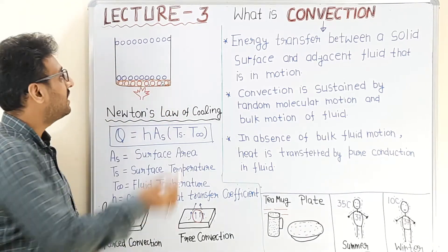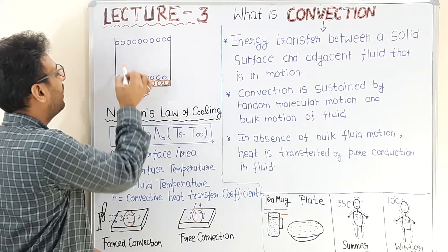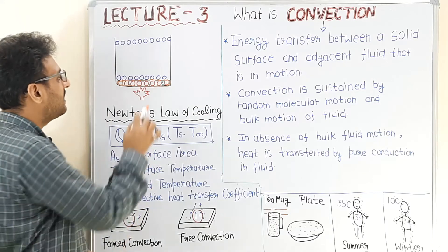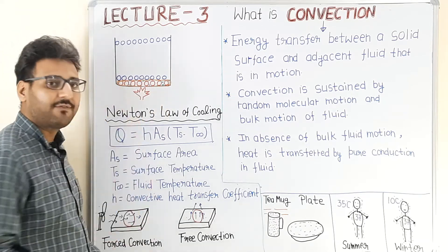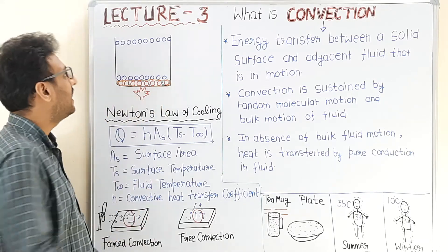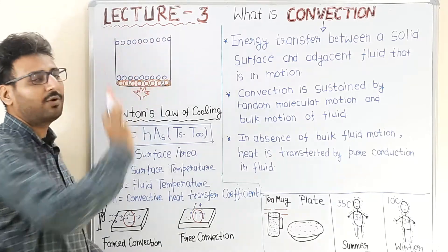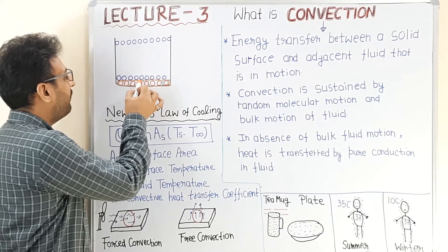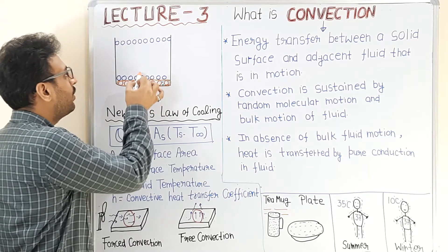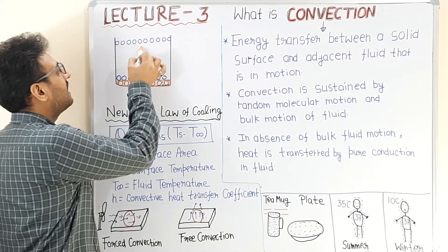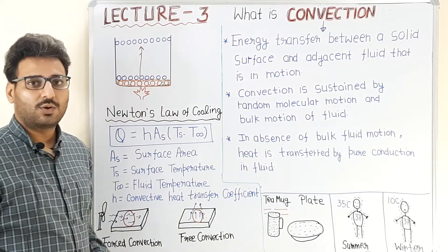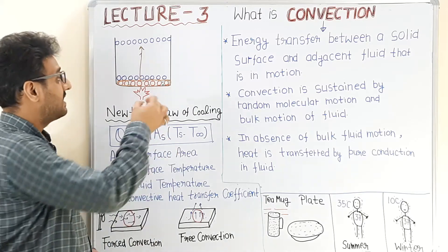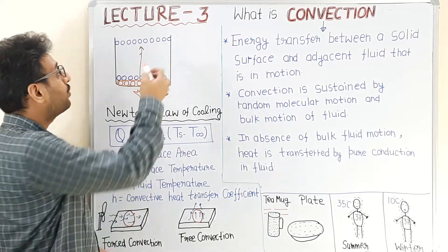The second possibility is that this complete layer is moved from here to a region within the fluid. I have shown only three layers, but the whole region is filled with fluid. This region is having high temperature and high heat, and another region of the fluid is having low temperature and low heat. This complete layer, if moved to a region where temperature of the fluid is low, transfers its heat content to that region.